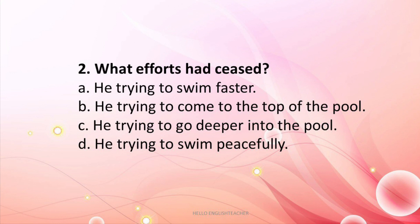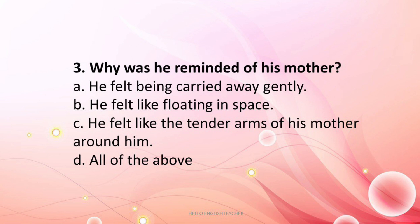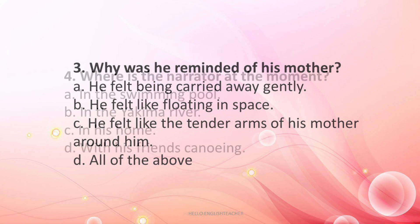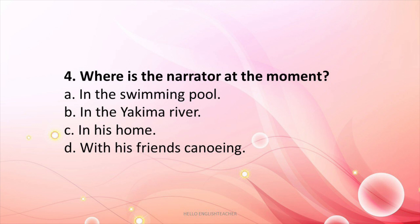Question 2: What efforts had ceased? The answer is B — he trying to come up to the top of the pool; all his efforts had ceased. Question 3: Why was he reminded of his mother? The answer is all of the above — he felt being carried away gently, felt like floating in space, and felt like the tender arms of his mother around him. Question 4: Where is the narrator at the moment? The answer is A — in the swimming pool.